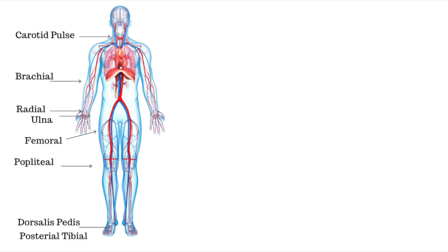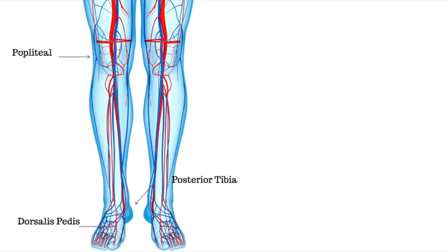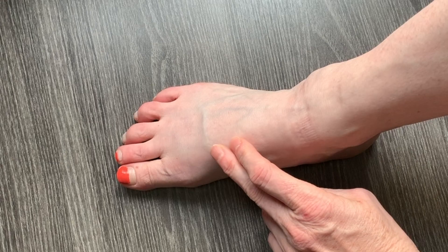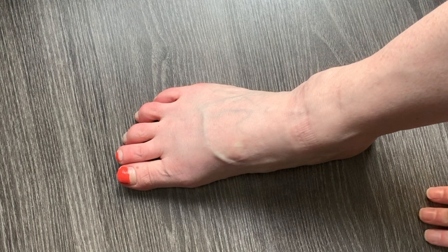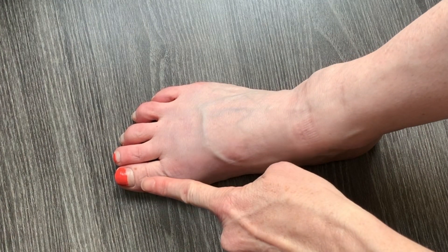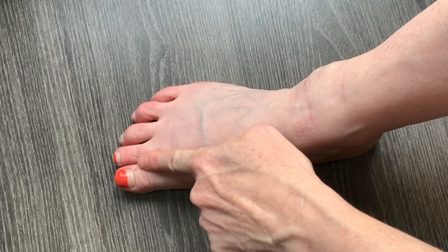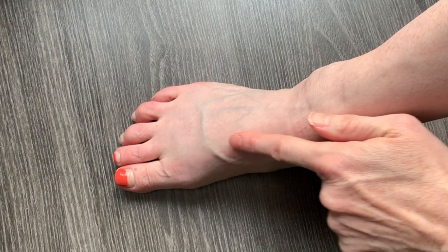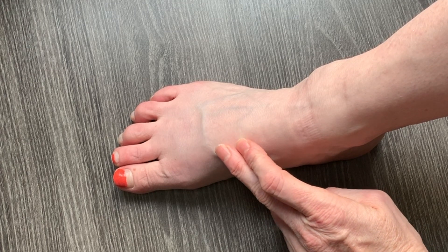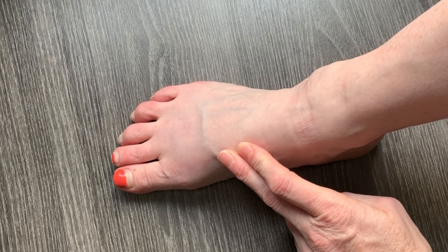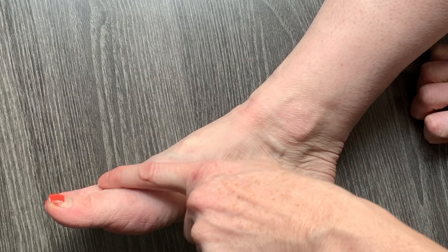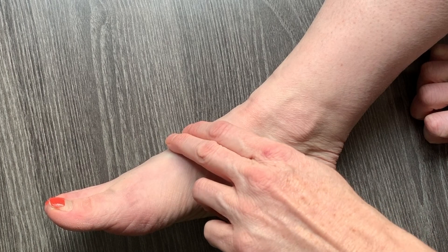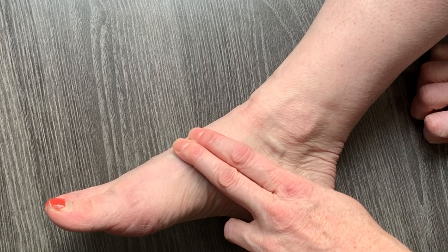Moving to the lower extremities: the femoral artery, which we won't demonstrate; the popliteal artery, which is behind the kneecap; and then the dorsalis pedis and posterior tibialis, which we'll focus on next. The dorsalis pedis pulse is on the top surface of the foot at the arch. To locate it, start your finger at the gap between your two large toes, draw a line straight up to the arch, plant your two fingers, and gently roll in or out — your patient's pulse may be on either side of that arch.